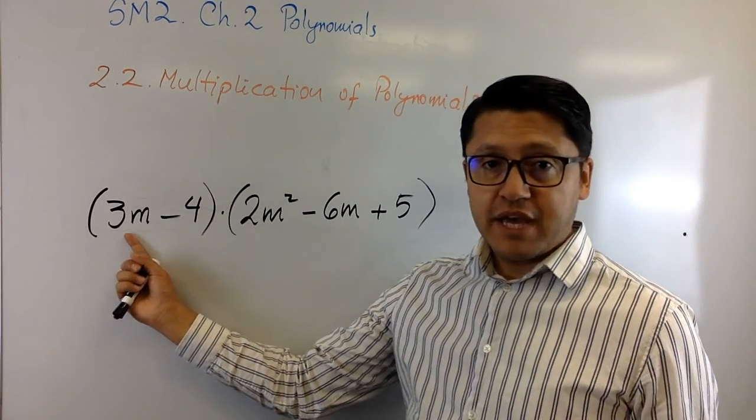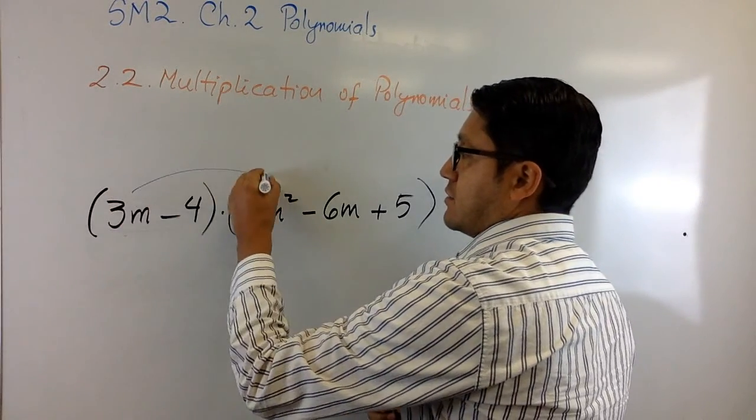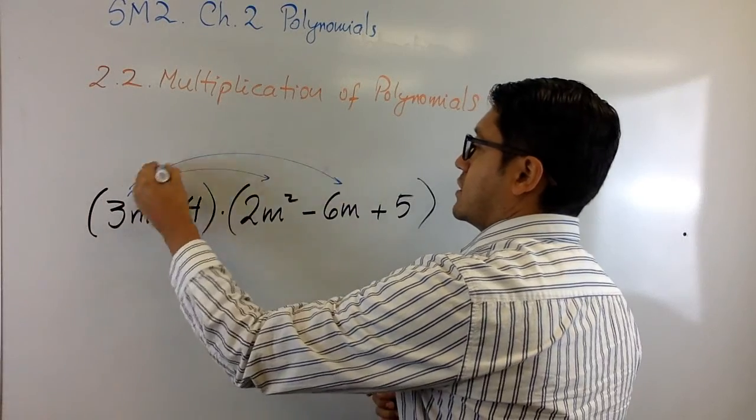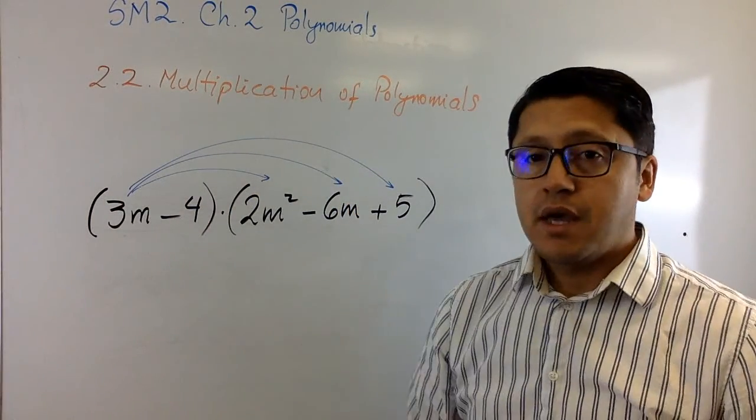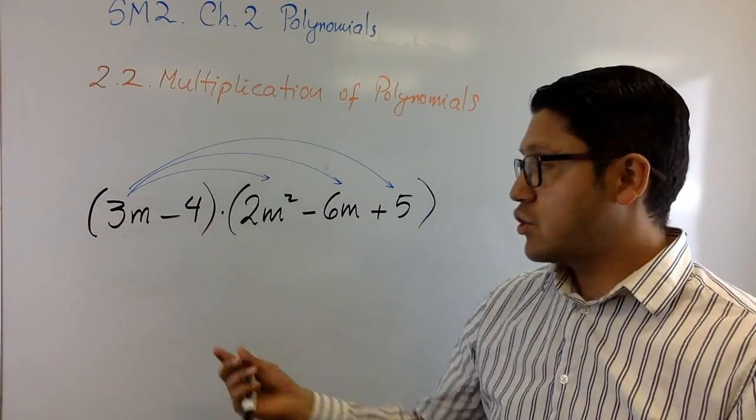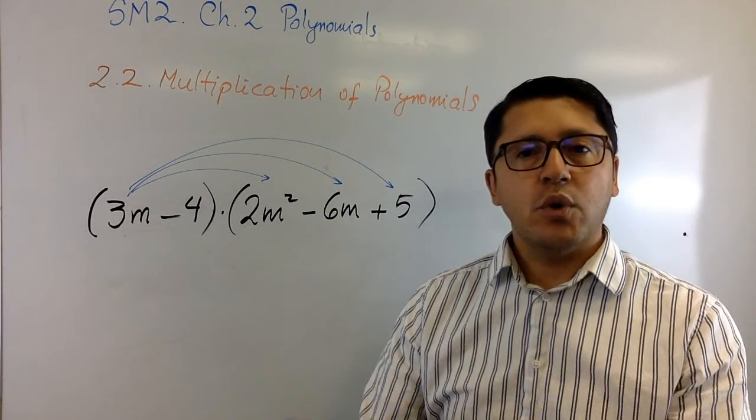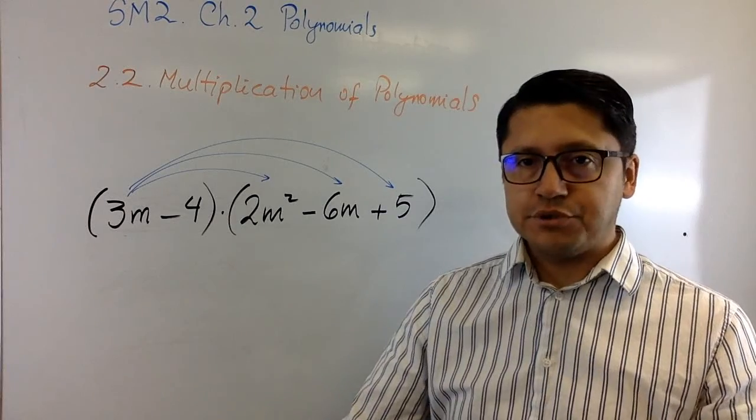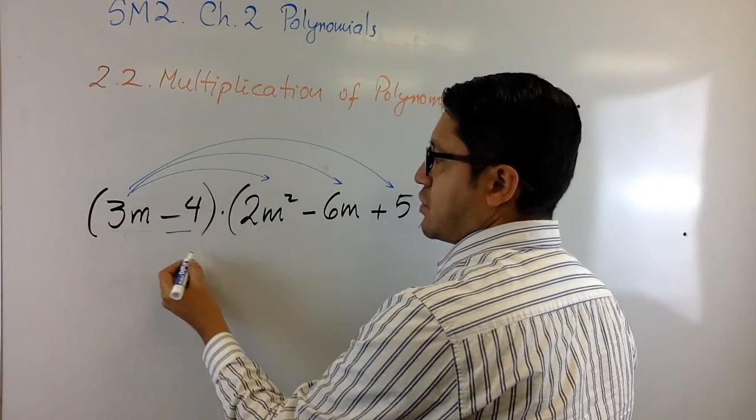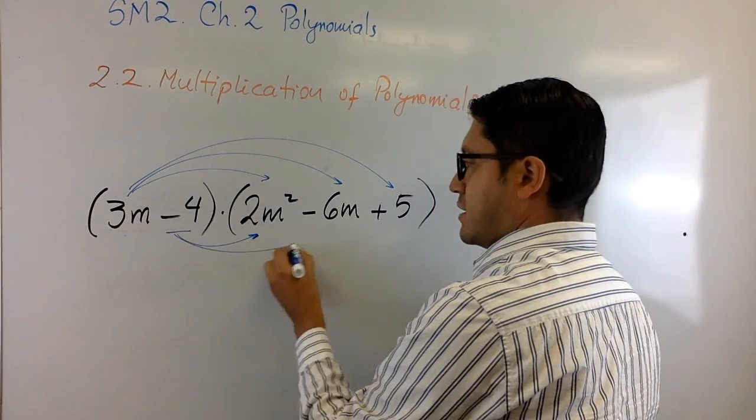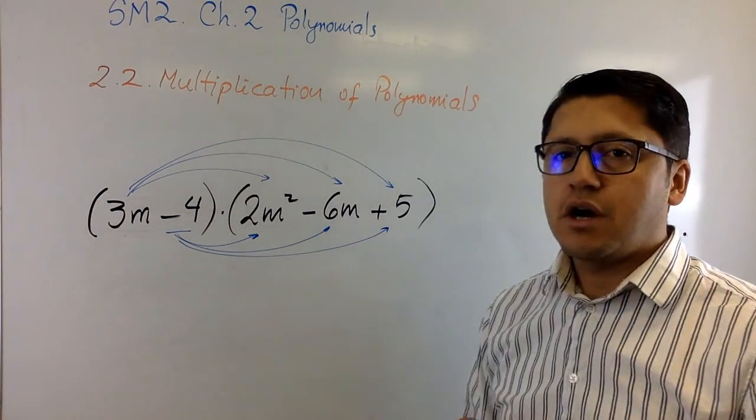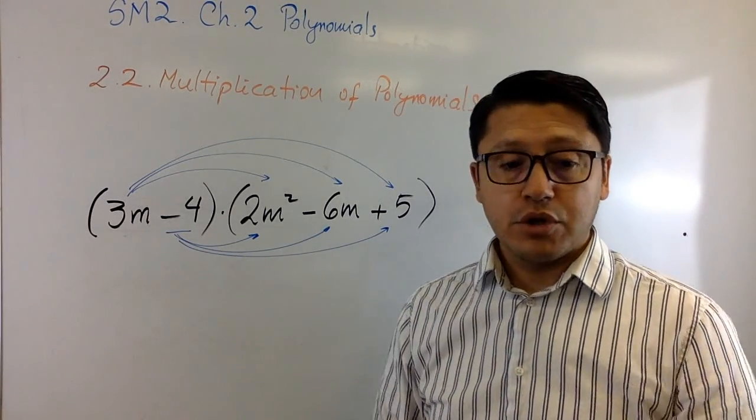I'm going to multiply 3a by this one, this one, and this one. And then the second term, and if I had more terms this is what is going to happen and then you understand how the drill goes, then this term is going to be multiplied eventually by each of the terms of the next polynomial.